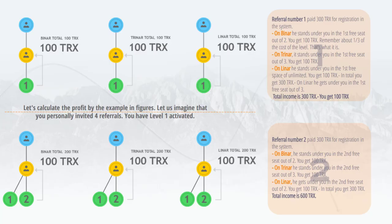In Biner and Triner, you get income from referrals of each referral level when they buy only that level. With level 1 referrals, you get income only when they buy level 1. With level 2 referrals, you get income only when they buy level 2. With level 3 referrals, you get income only when they buy level 3, and so on. In Lina, you get income only from level 1 referrals when they buy any level.